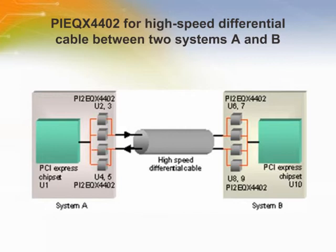In this example, systems A and B are using a high-speed differential cable, 3 meters to 7 meters in length, for the PCI Express interface. The PI2-EQX4402 chips U2, U3, U6, and U7 guarantee that the signals at the input of U2 and U10 will pass the PCI Express compliance test.